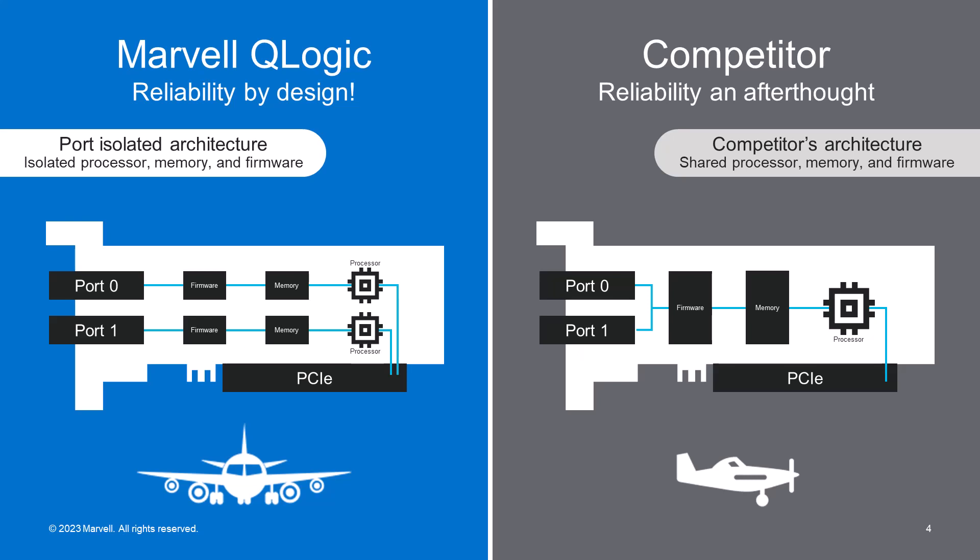Now, the shared architecture design used by the other HBA vendors is on the right, and it utilizes an ASIC design that shares processor, memory, and driver resources across all the ports on the adapters. This is analogous to a single engine airplane — if there's a problem with the engine, it affects the entire plane.